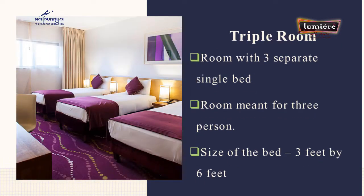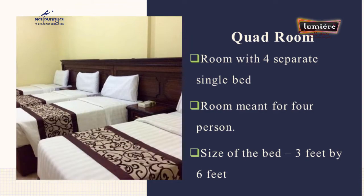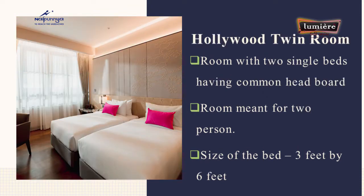The next one is triple room. As the name suggests, this is a room with three separate single beds. The size of the bed is the same as a single room, and this room is meant for three persons. Next, we have quad room — a room for four persons with four separate single beds, each with the size of three feet by six feet. Hollywood twin room is a room with two single beds with a common headboard, meant for two persons.